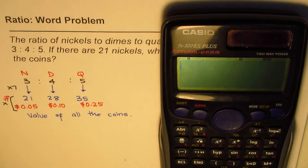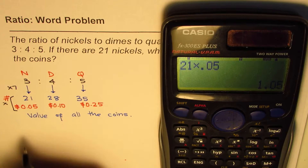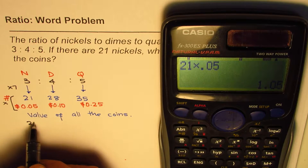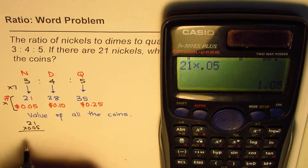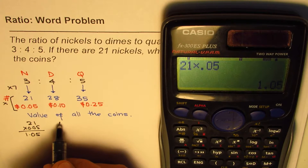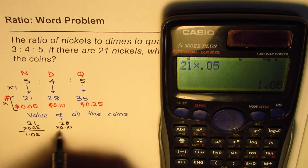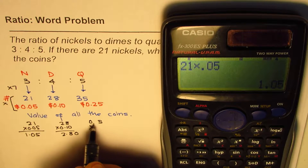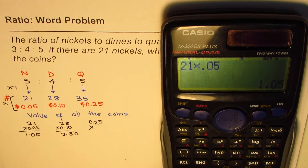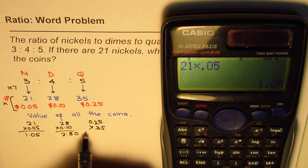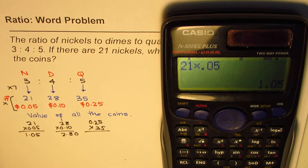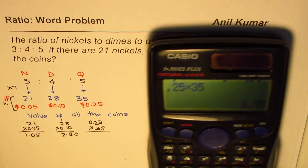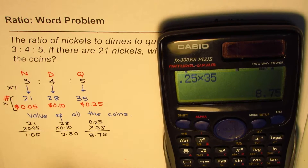So let's do 21 times 0.05. We get 1.05. Similarly, we'll do 28 times 0.10, so that is 2.80. And then we have 35 times 0.25. So we'll do 0.25 times 35, which gives us 8.75.